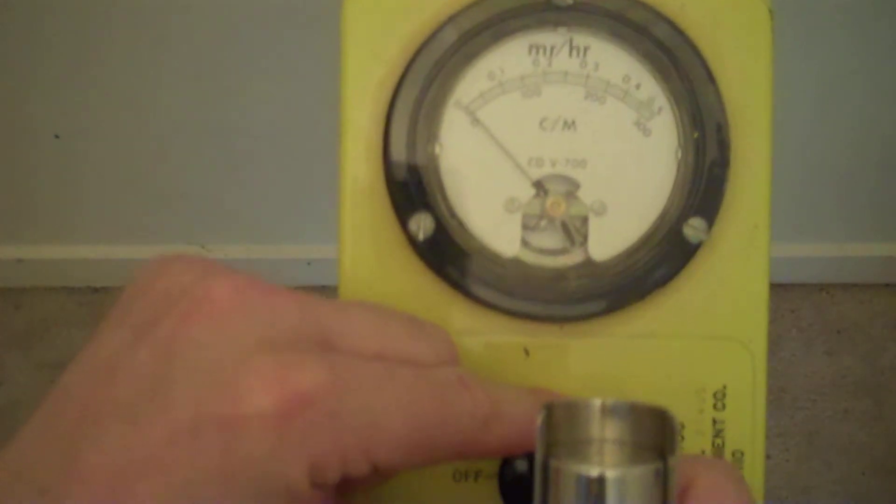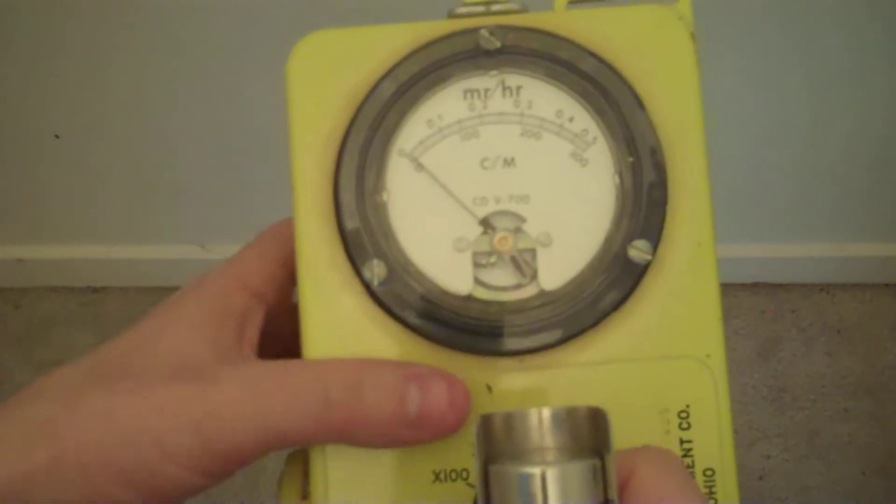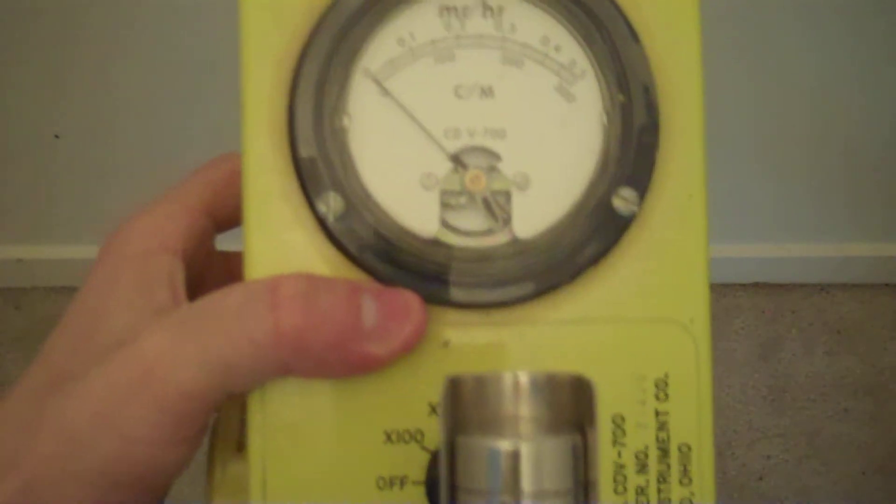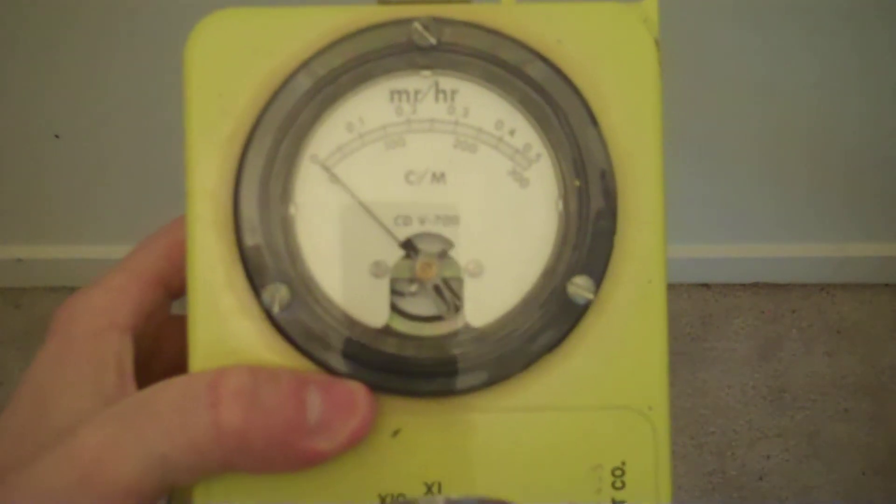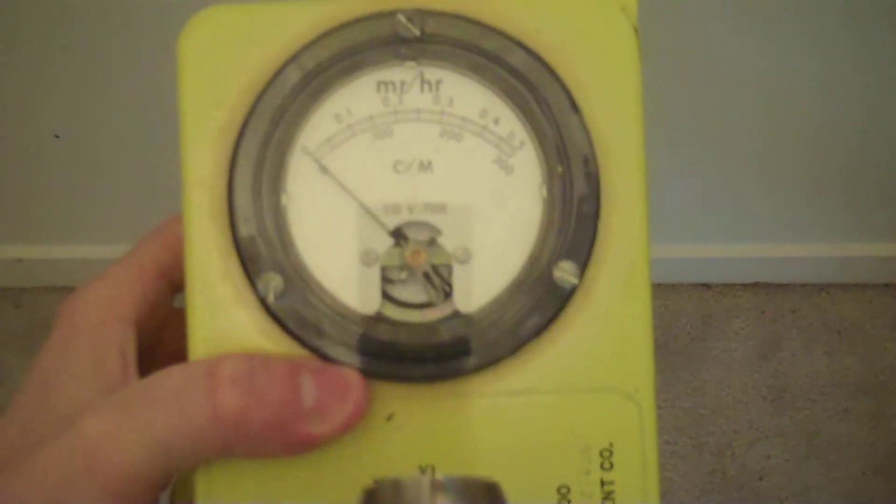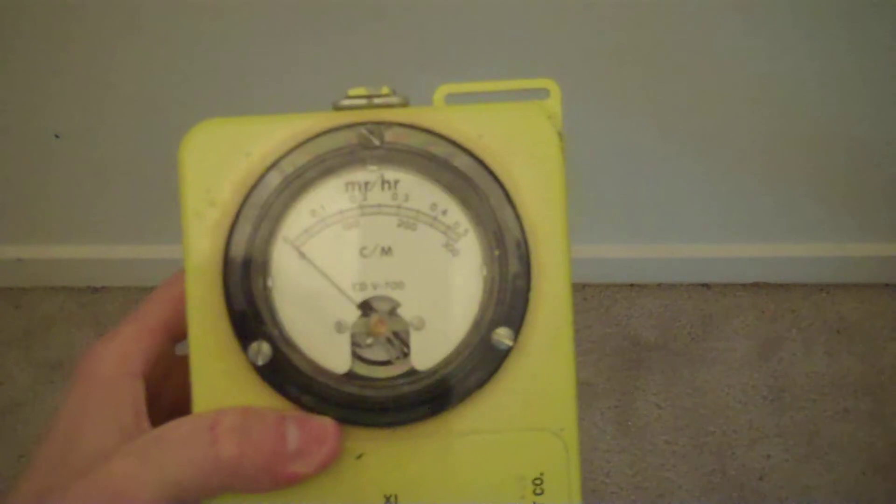In the times 10 mode, the scale is now multiplied by 10. Whereas it was 100 counts per minute, it is now 1,000, and so on. So the range is now 0 to 3,000 counts per minute, or 0 to 5 millirenkens per hour.